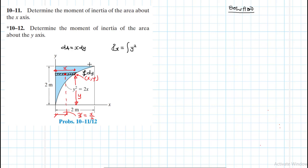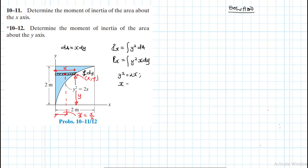Then our moment of inertia about the x-axis: Ix is equal to the integral of y-squared dA — this is why it is also called the second moment of area, because we are taking the moment of area twice. So Ix equals the integral of y-squared times x dy. We know the curve is defined by y-squared equals 2x, so we can write x in terms of y: x equals y-squared divided by 2.